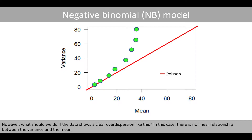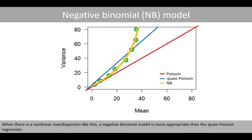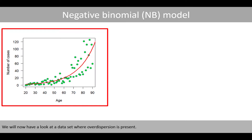However, what should we do if the data shows a clear overdispersion like this? In this case, there is no linear relationship between the variance and the mean. The quasi-Poisson model would not be appropriate because it assumes that the variance increases linearly as a function of the mean, and we see that the straight line does not seem to fit well with this data. When there is a non-linear overdispersion like this, a negative binomial model is more appropriate than quasi-Poisson regression. We'll now have a look at the dataset where overdispersion is present.